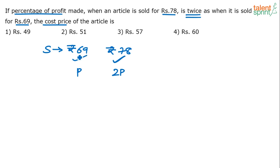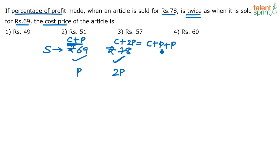Since 69 is a selling price, we can say it is cost price plus profit p. And 78 is also a selling price, so it is cost price plus profit 2p, which can be expanded as c plus p plus p. So 69 rupees is cost price plus profit, and 78 rupees is the same cost price plus profit plus one more profit of the same amount.